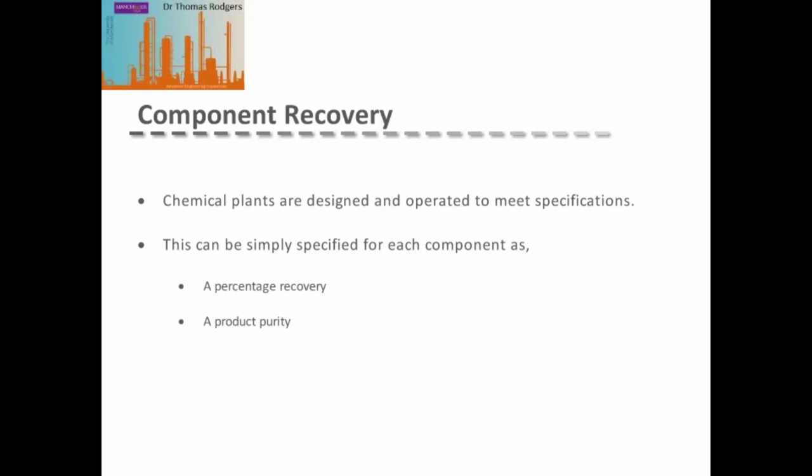Chemical plants are designed and operated to meet specifications. These specifications are generally given by the properties of the materials that we want to sell, or by the feed that needs to go into the next step in the process.